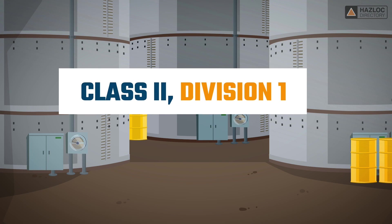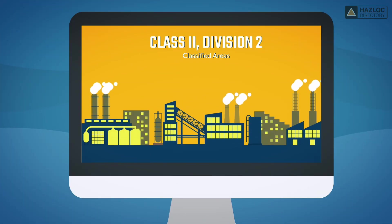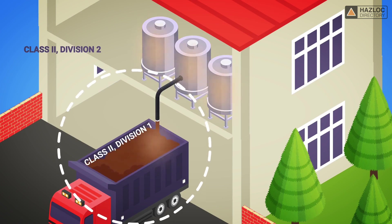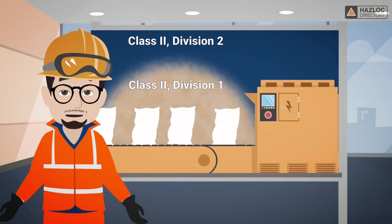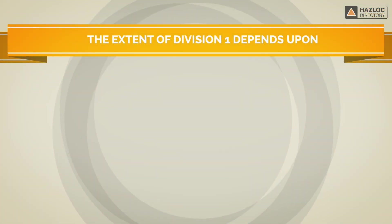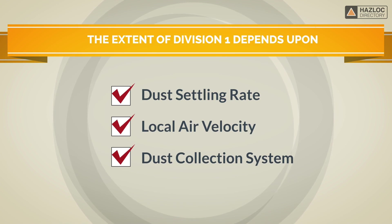In this animation, we will focus on the class division system classification of dust explosive atmospheres, specifically class 2, division 1. We have made a separate video about class 2, division 2 if you want to learn more about that classification. Class 2, division 1 is defined as a location in which combustible and explosive dusts are in the air under normal operating conditions and in quantities sufficient to produce explosive or ignitable mixtures. Dusts are in the air in these class 2, division 1 locations because dusts are being produced by handling or processing. The extent of division 1 depends upon the dust settling rate, the local air velocity, and the dust collection system used during processing.